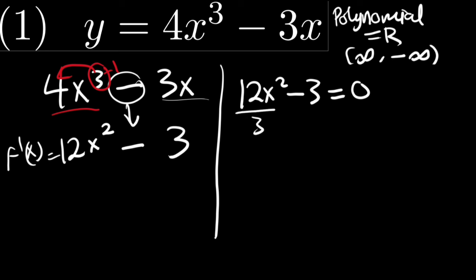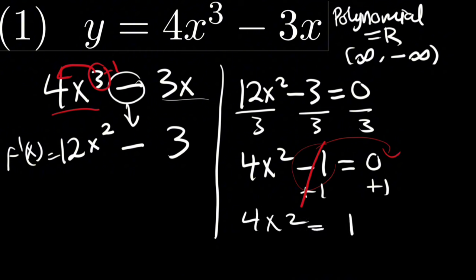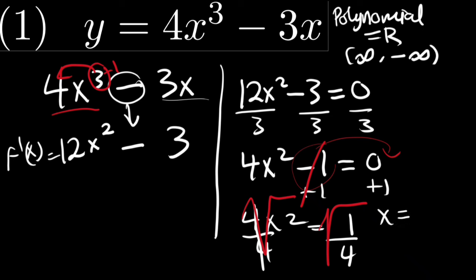To solve this, we will start by dividing the whole equation by 3 to simplify it. So we have 4x squared minus 1 equals zero. We add 1 to both sides to get 4x squared equals 1. Dividing both sides by 4 gives x squared equals one half. Taking square roots of both sides, we get x equals positive one half and x equals negative one half. So these are the critical points.